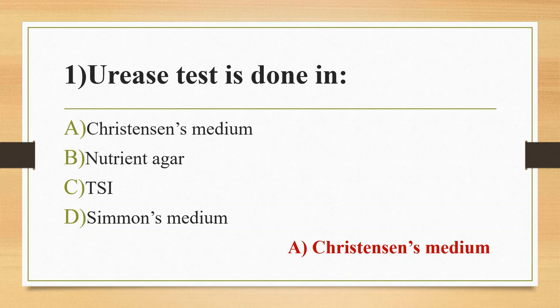Simmons Medium, that is Simmons Citrate Medium, is a solid medium for citrate utilization. It is used to differentiate gram-negative bacteria based on citrate utilization. Bromothymol Blue is the pH indicator. Klebsiella and Proteus mirabilis are examples of citrate-positive organisms.